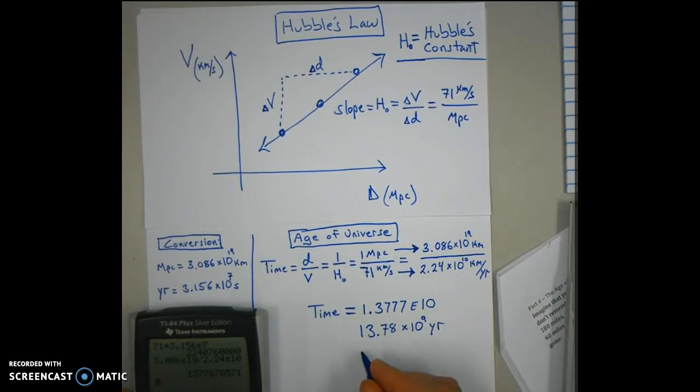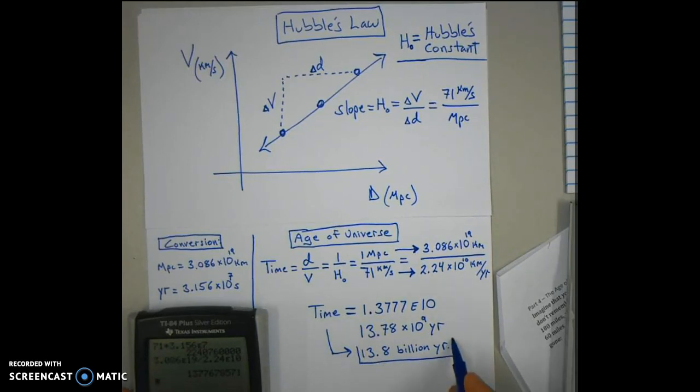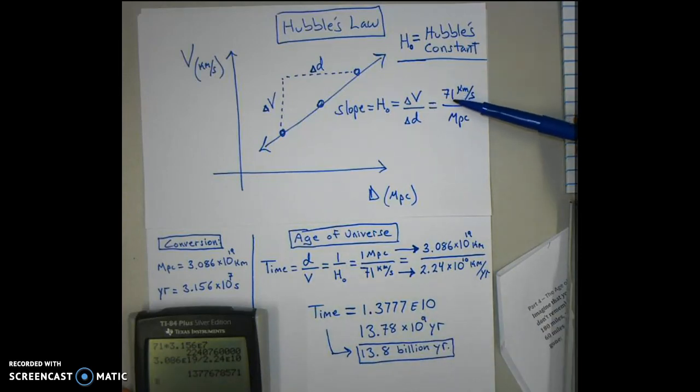And if you round that down to three digits, that's about 13.8 billion years old, the accepted age of the universe. Your job is to figure out how much time the universe has had to expand based on your value of the slope. So while I'm using the number 71, you will substitute your number using the same conversions and then represent your final solution in units of billions of years or 10 to the 9th years.